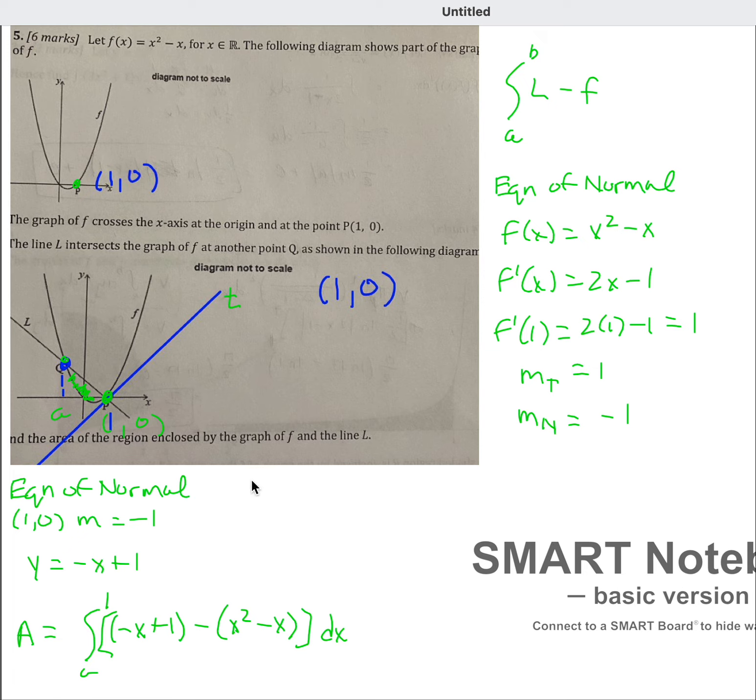So we would do that by setting the equation of the normal negative x plus 1 equal to x squared minus x. The x's cancel out, negative x, negative x. If I add x to both sides, then they cancel out. And so we have x squared equals 1, which means x is equal to plus or minus 1.